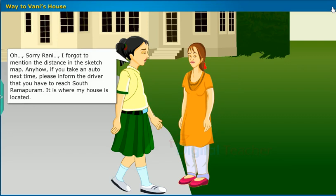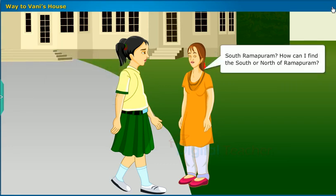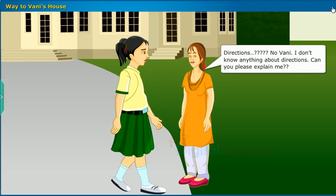Anyhow, if you take an auto next time, please inform the driver that you have to reach South Ramapuram — that is where my house is located. South Ramapuram? How can I find the south or north of Ramapuram? Hey, it is very simple. My house is in the south of the village and the opposite side is north. By the way, have you heard about directions and do you know how to find them? No Vani, I don't know anything about directions. Can you please explain?